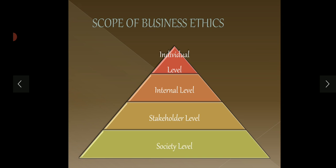Now let's talk about the scope of business ethics — where does it apply? As I told you before, scope means coverage — where does it cover? Number one is individual level. At the individual level in business, how are you behaving person to person? Is one person helping the other, or is he trying to spoil their image? All of this comes under individual level ethics.